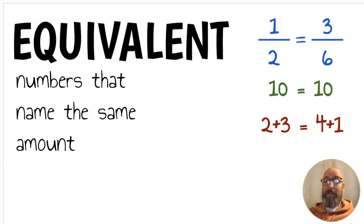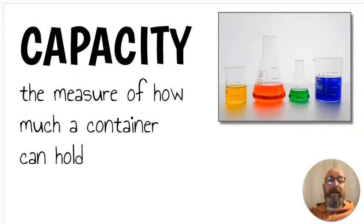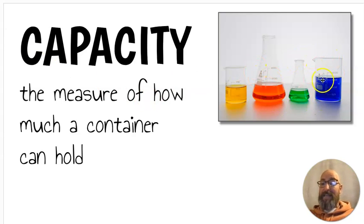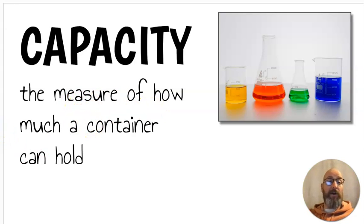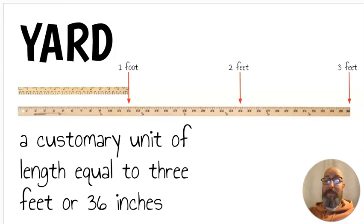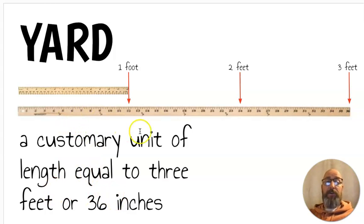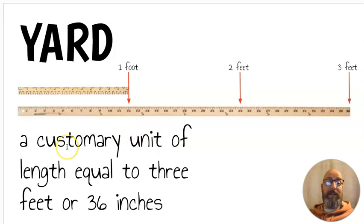Next let's look at some measurement. Capacity is the measure of how much a container can hold. Containers come in different sizes, and the amount each holds is its capacity. We can also measure using a yard. A yard is a customary unit of length equal to three feet or thirty-six inches — you see a yardstick here, it's equal to one, two, three feet.